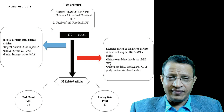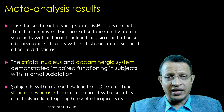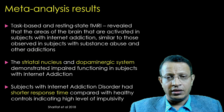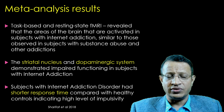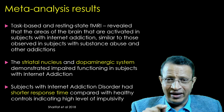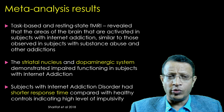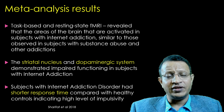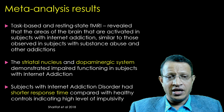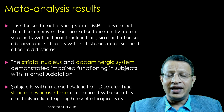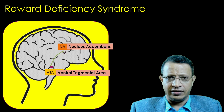Both task-based and resting-state fMRI revealed that the brain areas activated in subjects with internet addiction are similar to those observed in alcohol abuse, drug abuse, cocaine, and cannabis abuse. This means internet addiction affects the brain similarly to cocaine or opioids. The striatal nucleus and dopaminergic system demonstrated impaired functioning in subjects with internet addiction, and these subjects showed shorter response times than healthy controls, indicating high impulsivity.